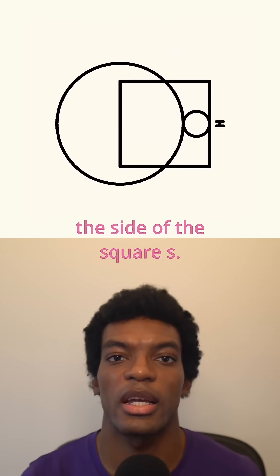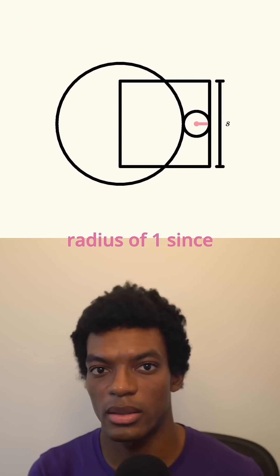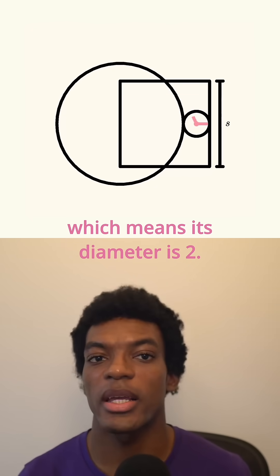First, let's call the side of the square S. We know that the small circle has a radius of 1, since it's a unit circle, which means its diameter is 2.